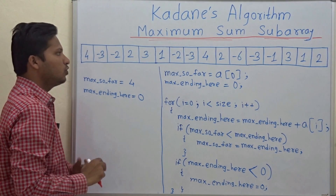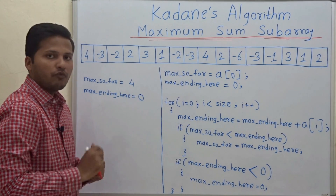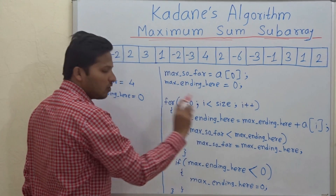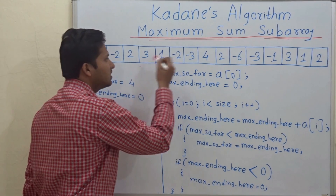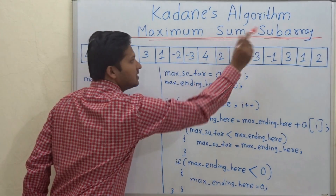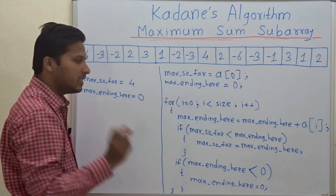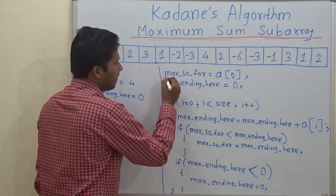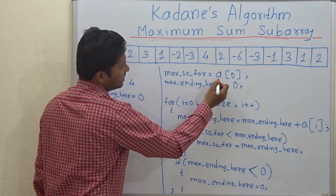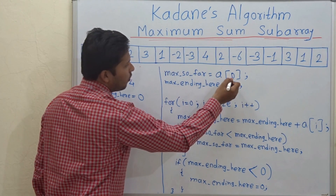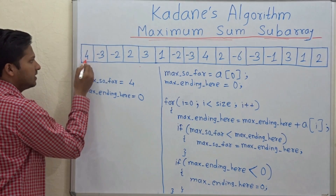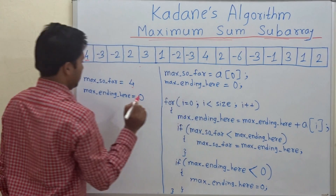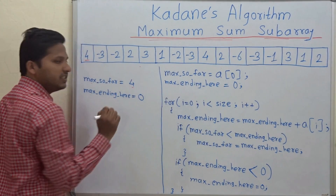Let's see how to do this. This is the algorithm for finding out the maximum sum, and then we will modify this algorithm for finding out the starting index and ending index of the subarray which has that maximum sum. max_so_far is a variable which is first carrying the value of the first element of the array, that is 4. So max_so_far is 4. Then max_ending_here is initialized to 0 at first.